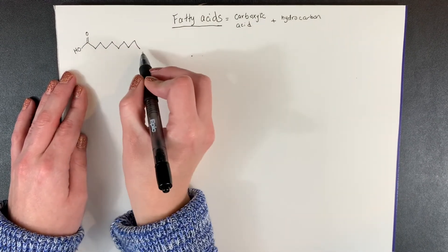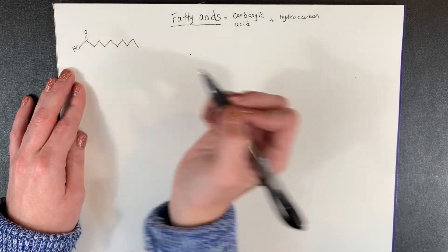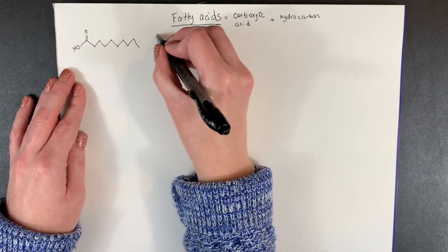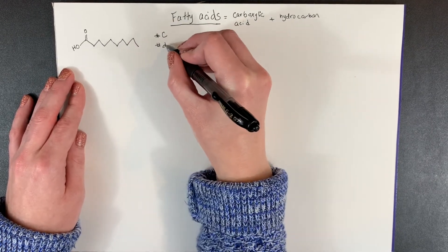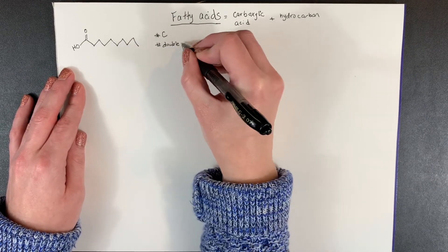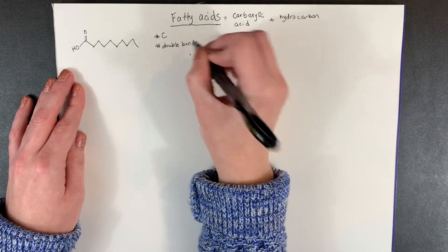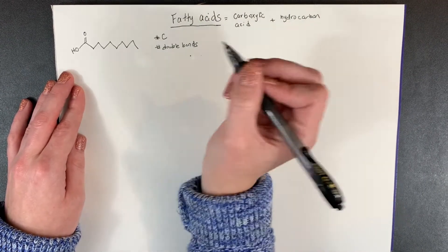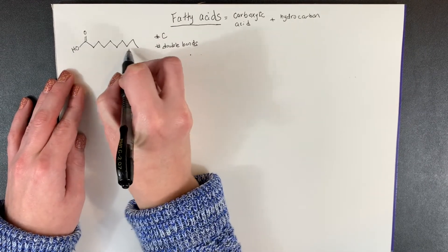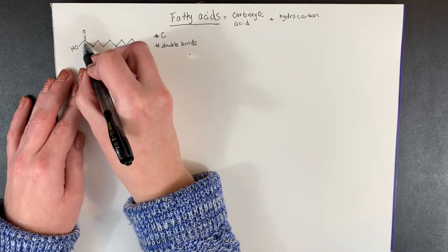Now fatty acids are characterized by two very important numbers, the number of carbons and the number of double bonds. So let's figure out these two numbers for the example fatty acid right here. To start the carbons, you just need to count how many make up this hydrocarbon chain.